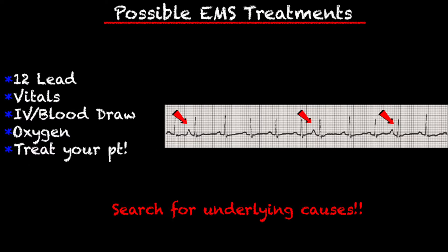Some of the possible EMS treatments can include getting a 12-lead — that's obviously how you would see the PACs — vitals, starting an IV, maybe obtaining a blood draw for the hospital, administering oxygen. But the main thing is to treat your patient and also search for underlying causes. Is this something that your patient normally has?